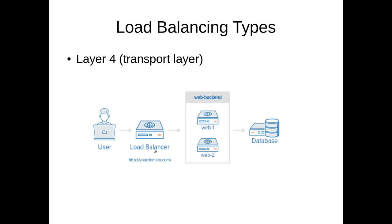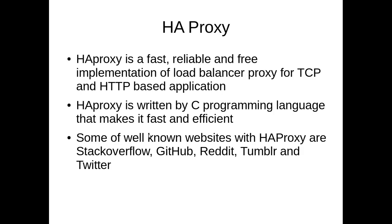For this we use HAProxy as our load balancer software. HAProxy, which stands for High Availability Proxy, is very fast, reliable, and freely available as open-source software. It is developed in C, which is why it is so fast and efficient. Large websites like GitHub and Twitter use HAProxy for their load balancing, so you can be sure it is a solid and reliable implementation — and you will be amazed how easy it is to configure.